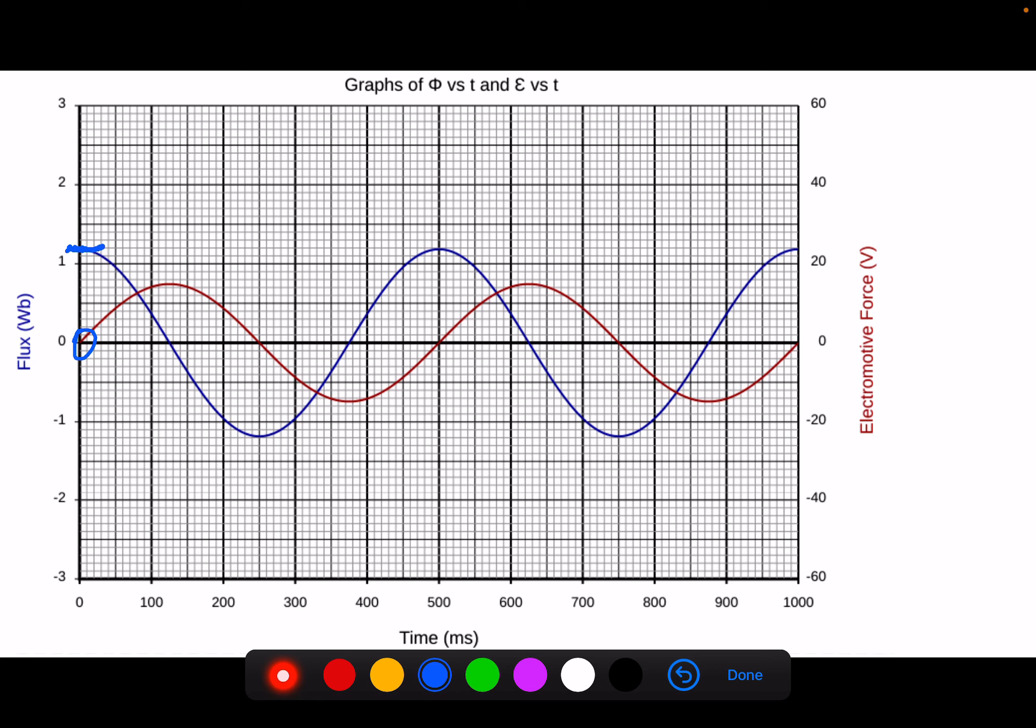You can see at this point, we have our maximum voltage, and that's because we have our steepest line. The flux is changing most rapidly. So I want you to realize one more time that the amount of voltage you get is not dependent on your flux, but on the flux changing. The faster it changes, the greater the voltage you're able to create.